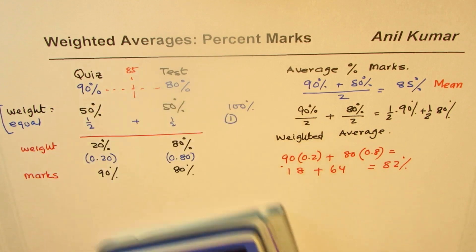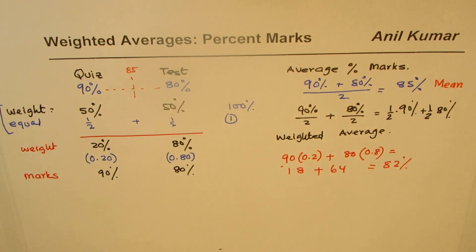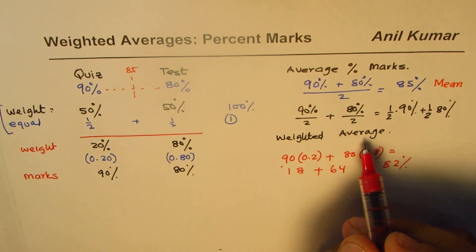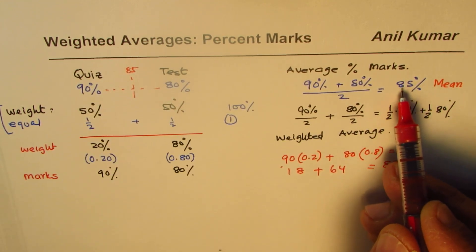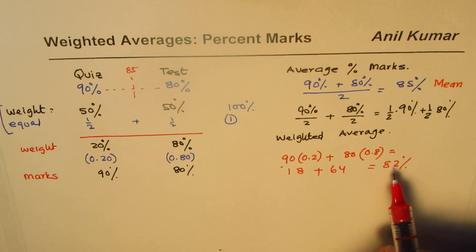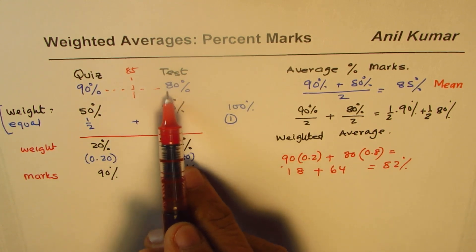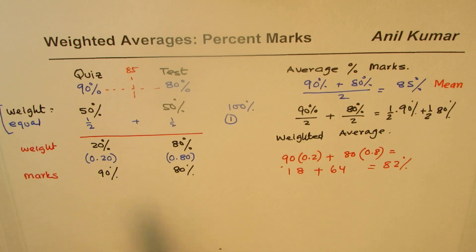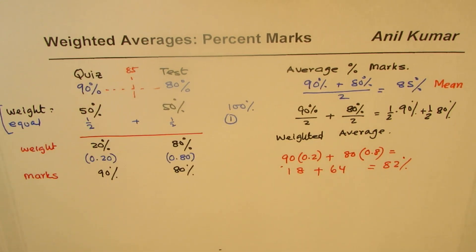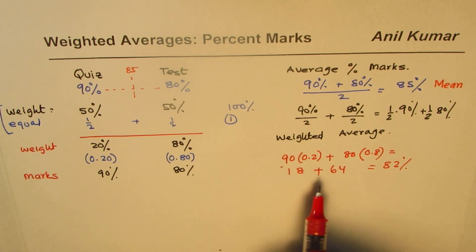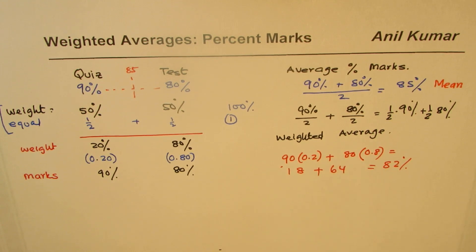So we get 82 percent. The average of your marks has shifted — it changed from 85 to 82, lower and towards the test marks. That is how the weights shift the average, and that is how we get the name weighted average. It becomes 82 percent.